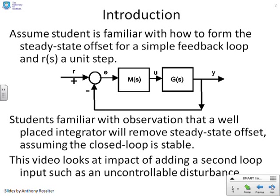First, let's remind ourselves of what we should know already. We're going to assume that students already know how to get steady-state offsets for standard loops of the form shown here, where the offset is the steady-state difference between the signal R and the signal Y, which is usually the signal in here, E. Students should be familiar with the observation that a well-placed integrator will remove steady-state offset, obviously assuming that the closed loop is stable.